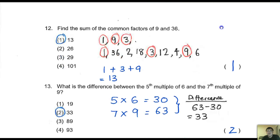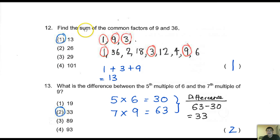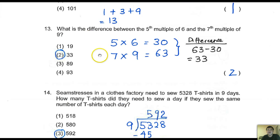Let us carry on. Number 12: sum - sum is add up. Sum of the common factors of 9 and 36. List down common factors: factors of 9 and factors of 36. What is common is 1, 3, 9. Sum means add 1, 3, 9 together. Answer is 13, number 1.